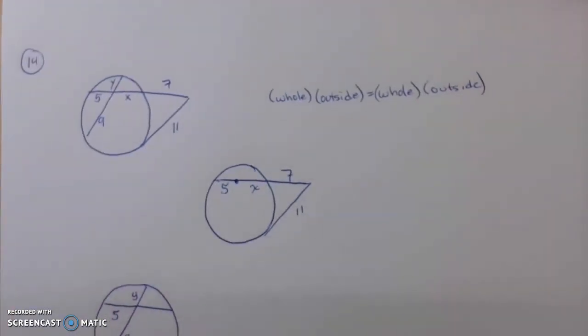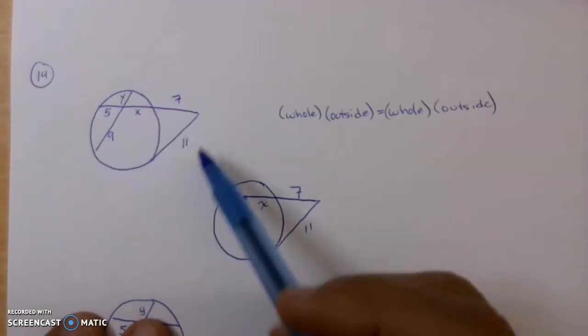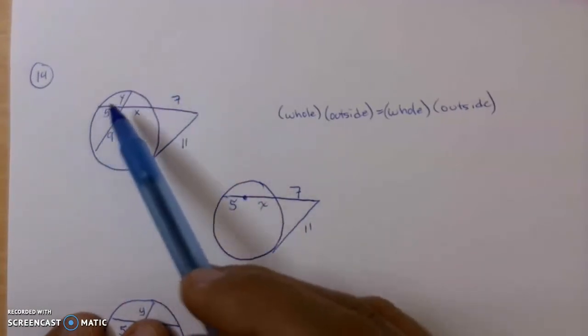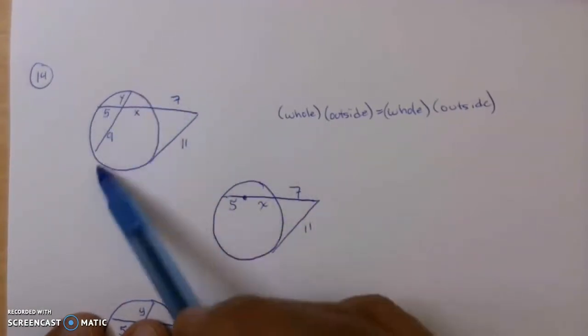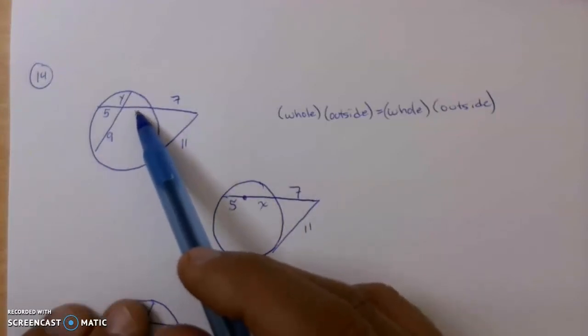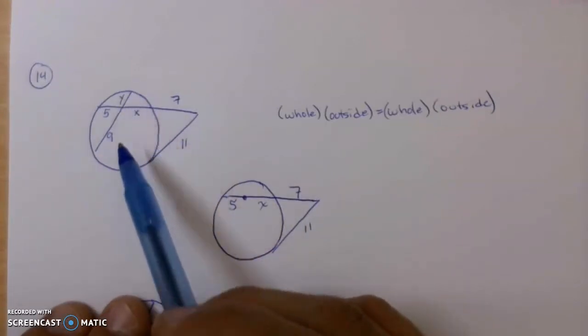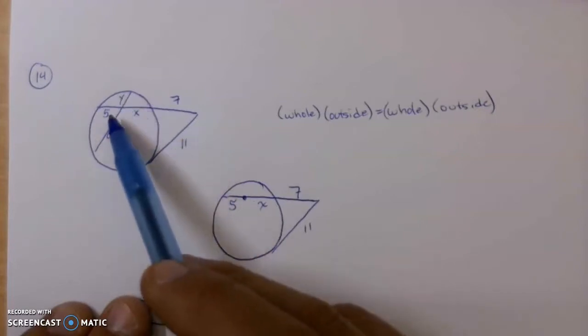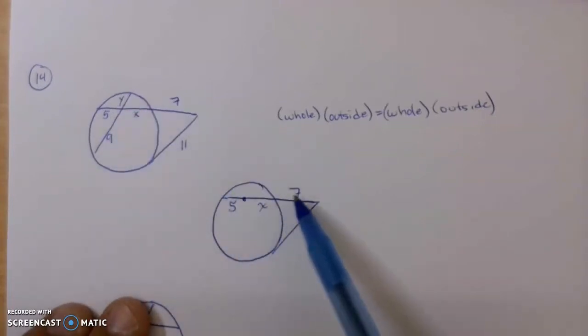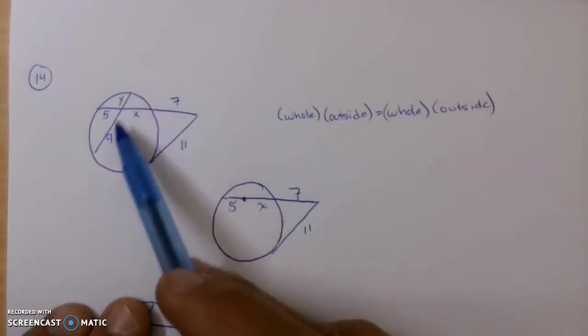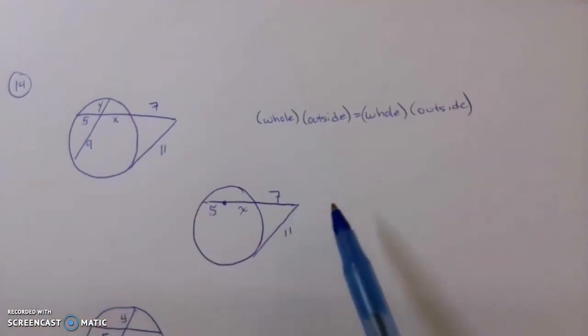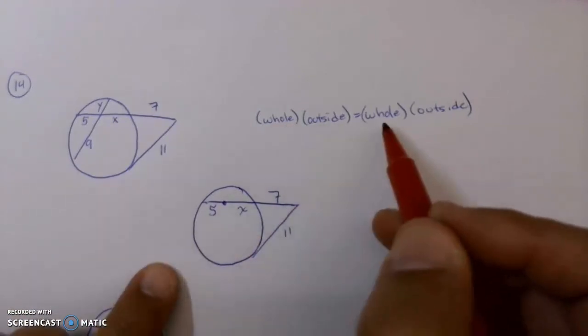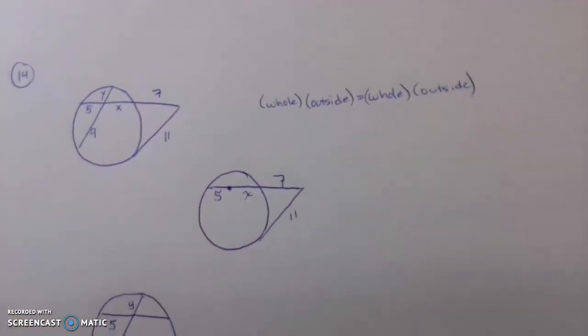Alright. I'm going to do number 14 as well, and here is 14. We have the circle. We have an outside segment. We have an inside segment. We're going to solve for X first, and then use that value for X to solve Y. Now what I did here with number 14 is I separated the part that I need to just solve for X. I got rid of this one line. I don't want the extra distractions. This is an outside portion. So again, whole times the outside, whole times the outside. Let me zoom in here.